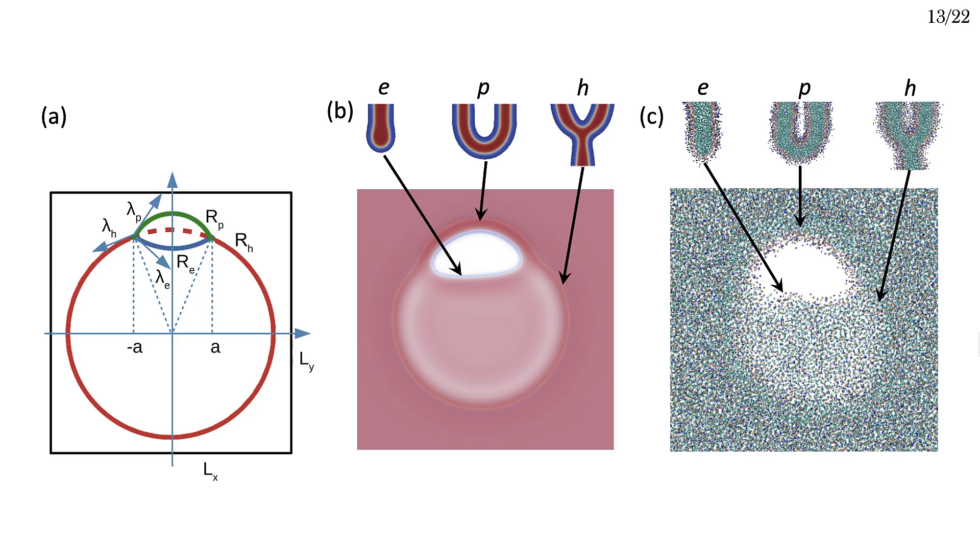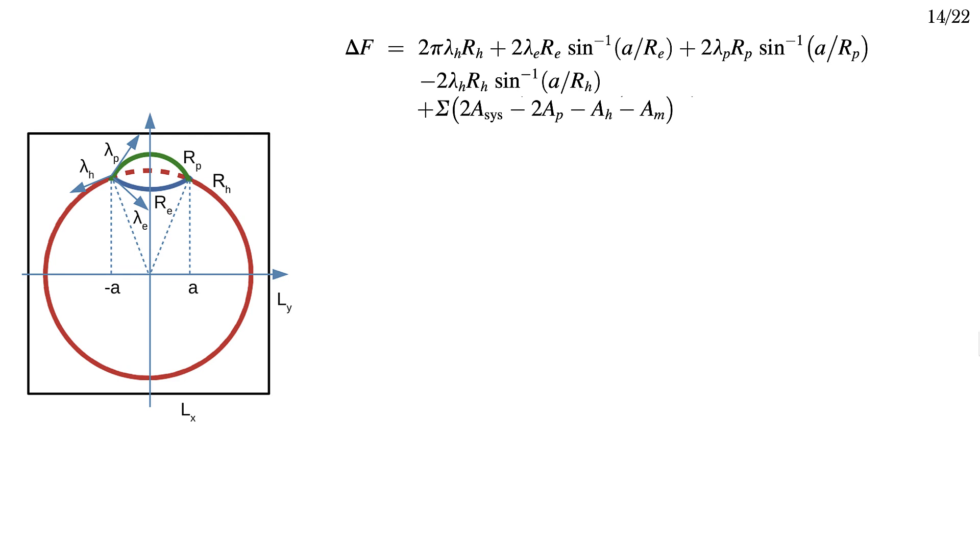Now back to our regularly scheduled circular hemifusion diaphragms. If we want to understand rim pores in circular diaphragms, we need the model to take into account finite membrane tensions, as well as complicated geometries and multiple line tensions. I'll provide a brief overview here, but if you're interested, I invite you to see Appendix A of the paper for more details.